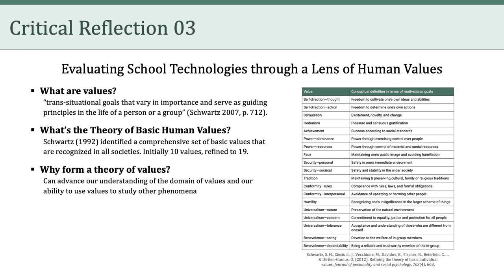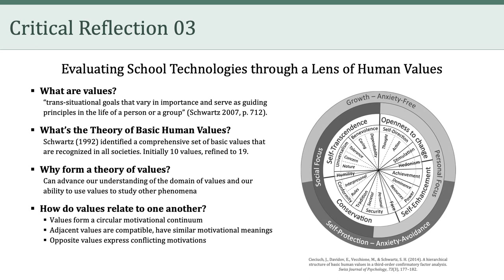Of course, that's what we're trying to do here in LTCH 676 — to use values as a lens for thinking about the relationship between specific educational technologies and teaching and learning. Notably, Schwartz and colleagues argued that human values form a circular motivational continuum, and accordingly, any adjacent values such as conformity, humility, and tradition are compatible and have similar motivational meanings. On the other hand, opposite values such as humility and hedonism express conflicting motivations. In this class, we can use a theory of human values like this one to help us evaluate specific educational technologies such as the ones you explored in Critical Reflection 3.